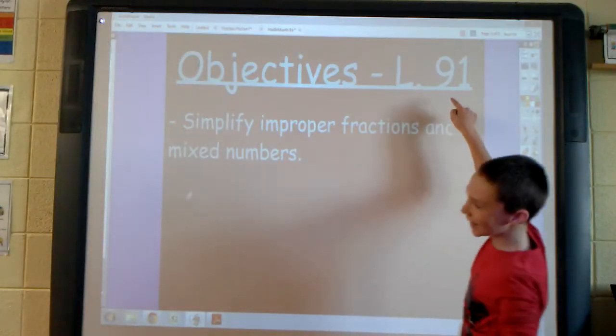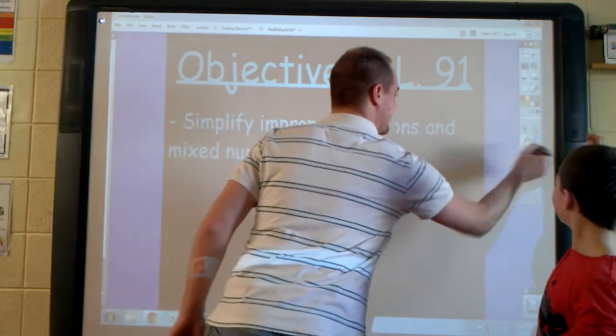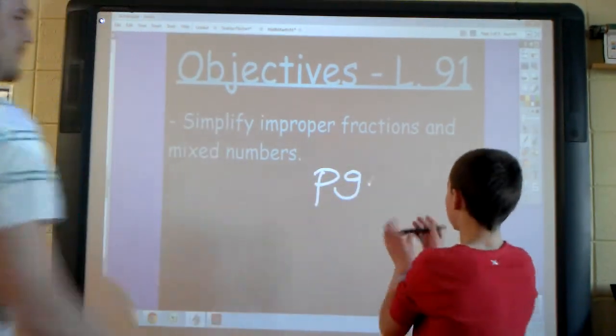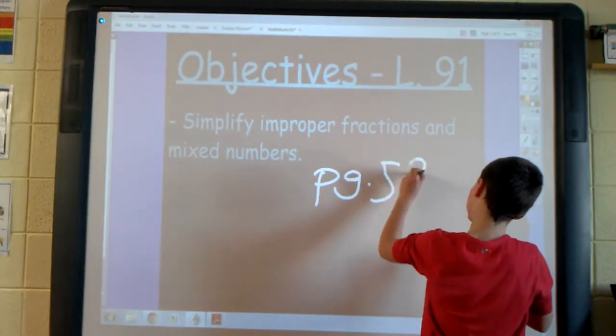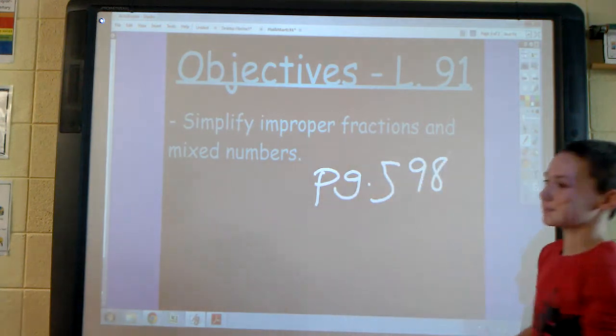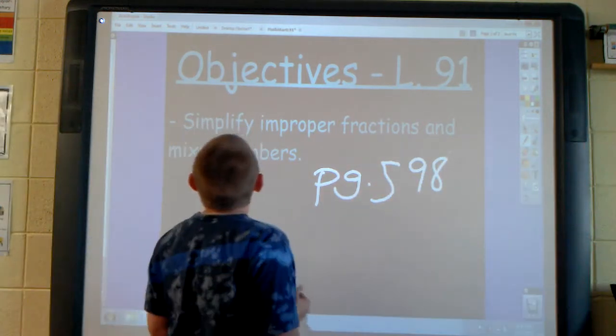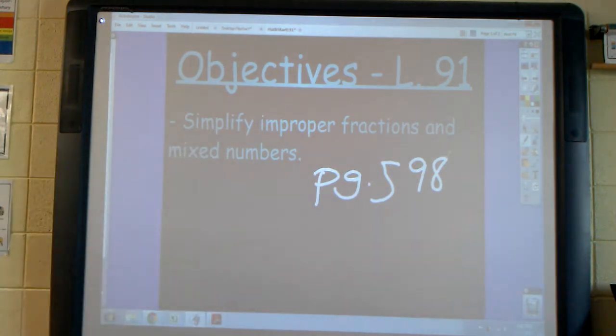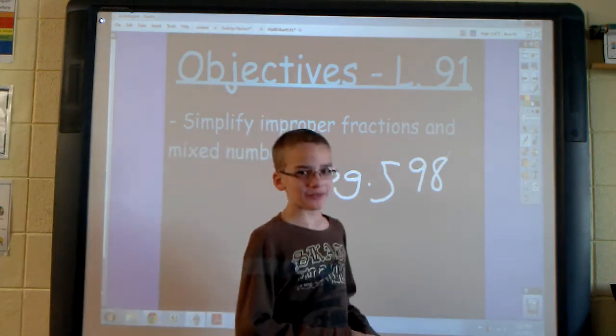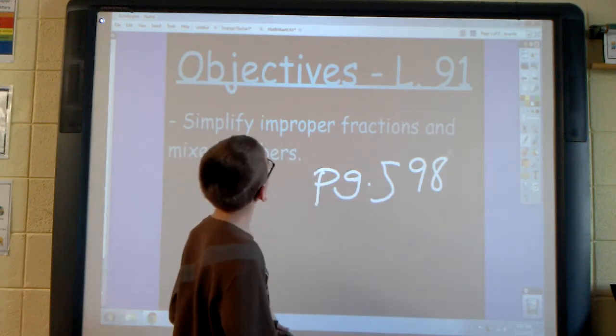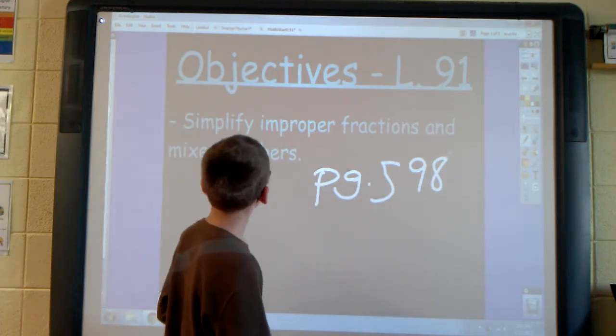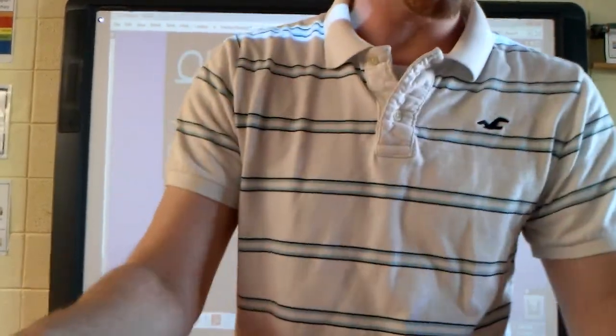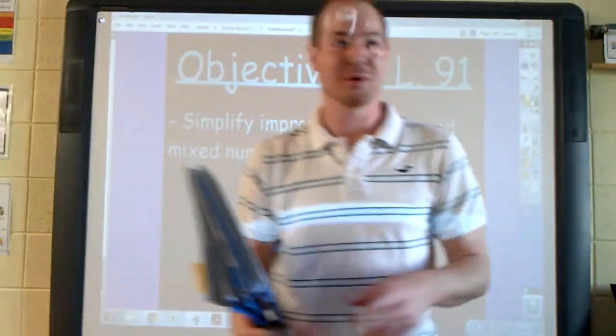We're doing lesson 91 and we're on page 598. Today's lesson is simplifying improper fractions. We only have one objective today, and that's simplify improper fractions and mixed numbers. Thank you, my lovely assistants. So on page 598, we'll begin with our new concept.